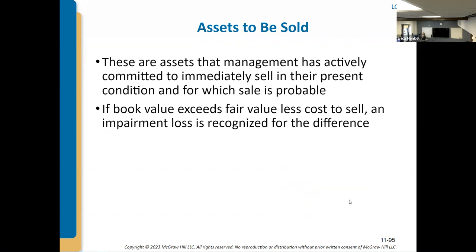If your book value is less than what you'll get after selling and paying commissions, you would say you're actively committed to selling this and it's likely to sell, so you write it down on your books to what you actually think you'll net for it.